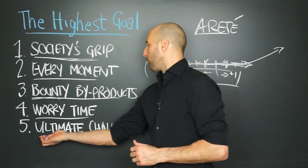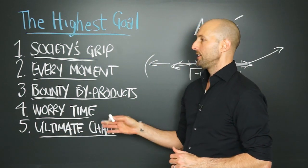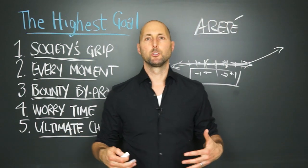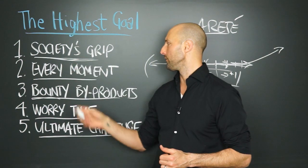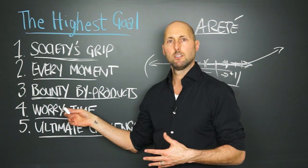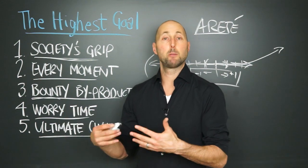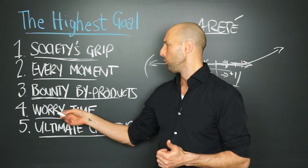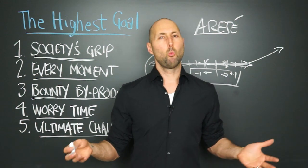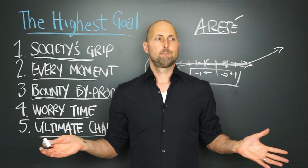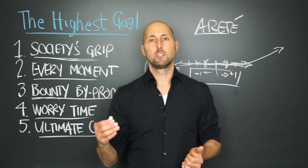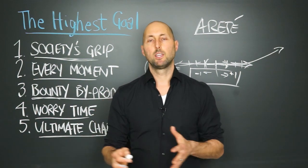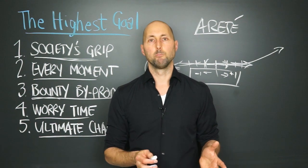Lots more we can talk about there, but we'll go to big idea number five: the ultimate challenge. So we want to get out of society's cruel grip, we want to rock at every moment, we want to realize bounty - material bounty and success as a byproduct of our spiritual success. We want to compartmentalize our worry time, but for what? Just so we can feel good? That's nice, but Michael Ray says the ultimate challenge is to figure out how we give our gifts in greatest service to the world.